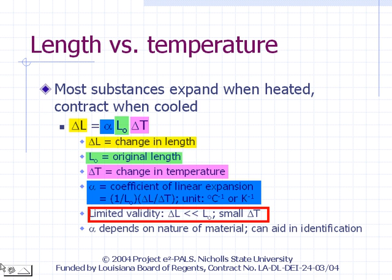The unit for alpha is per degree Celsius or per Kelvin. You will note that the units of L₀ and delta L will cancel out and delta T is in the denominator. Note that delta T in Celsius is exactly the same as the delta T in Kelvin. By definition, a one degree change on the Celsius scale is exactly equal to a change of one Kelvin.